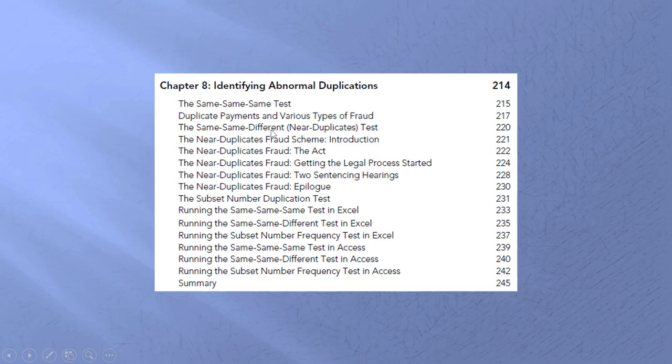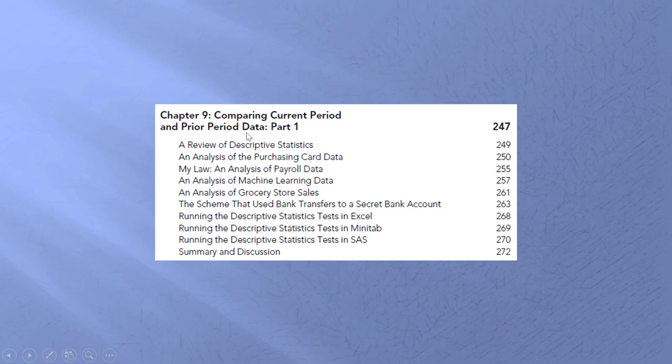We now talk about abnormal duplications. Sometimes corporations will pay a vendor twice — that second payment is part of the fraud scheme. What the accountant is trying to do is get the vendor to refund the money, and he or she will divert that refund for their own use. I have a good example here. We also talk about near-duplicates fraud — a reasonably long case — and show how to run the tests in Excel or Access.